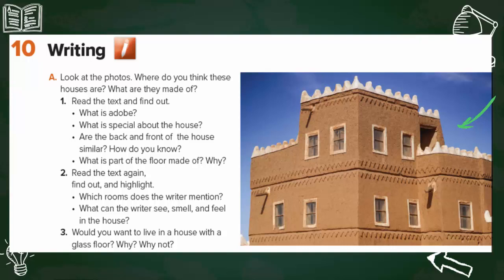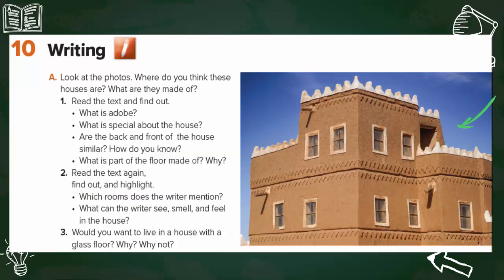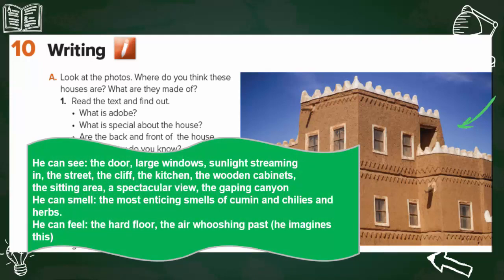Which rooms does the writer mention? A spacious room that stretches in all directions, and the kitchen. What can the writer see, smell and feel in the house? He can see the door, large windows, sunlight streaming in, the street, the cliff, the kitchen, the wooden cabinets, the sitting area, a spectacular view, and the gaping canyon. He can smell the most enticing smells of cumin, chilies and herbs.